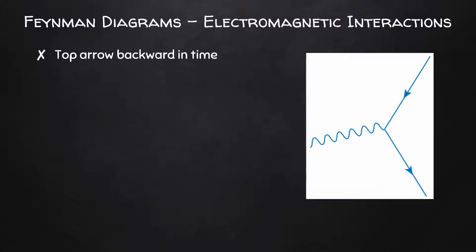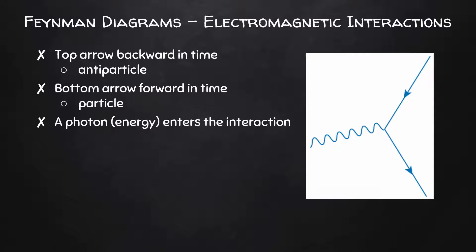Here, we can see that the top arrow is pointing backward in time, which means it must represent an antiparticle. The bottom arrow is pointing forward in time, so it must be representing a particle. We can also see that there's a photon, which is a quantum of energy, that enters the interaction. And then we see a positron, the antiparticle, and an electron, the particle, leaving the interaction.